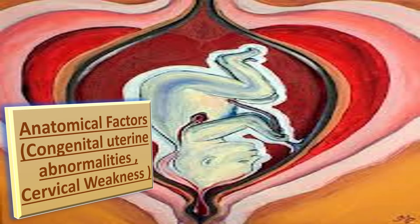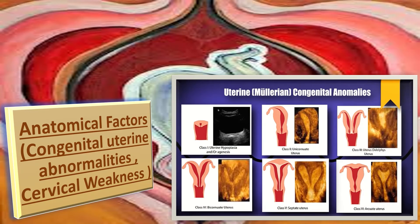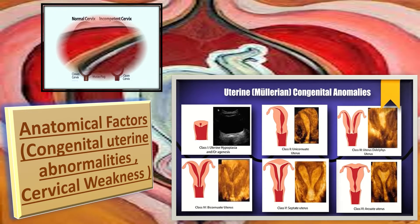Anatomical factors include congenital uterine abnormalities and cervical weakness. The exact contribution of congenital uterine anomalies to recurrent miscarriages remains unclear since their prevalence in general populations is unknown, but the reported prevalence of uterine anomalies in recurrent miscarriage populations ranges from 1.8 to 37.6 percent.